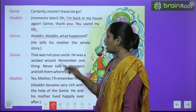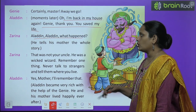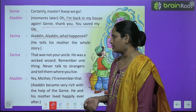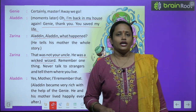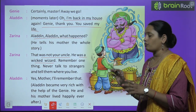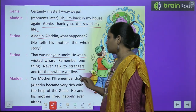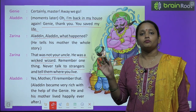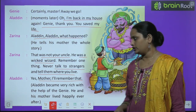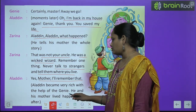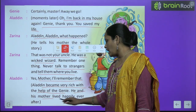Zarina told Aladdin: "That was not your uncle. He was a wicked wizard." Remember one thing — never talk to strangers and tell them where you live. Aladdin said: "Yes mother, I will remember that." Aladdin became very rich with the help of the genie, and he and his mother lived happily ever after.